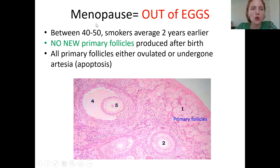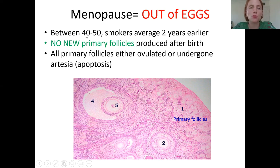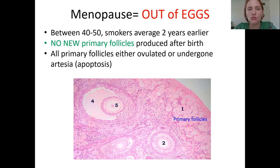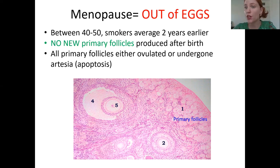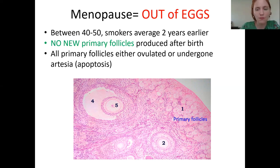Once you start going into menopause, it's because you're out of eggs. Menopause is usually going to occur between 40 to 50. There are some environmental influencers — for example, smoking — but the best indicator of when you might undergo menopause is when your mother went through menopause. There is definitely a genetic and inherited connection there.